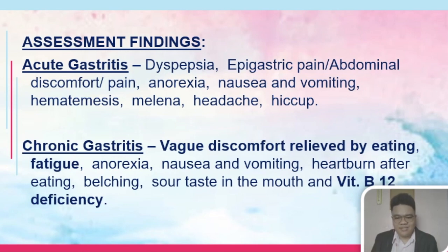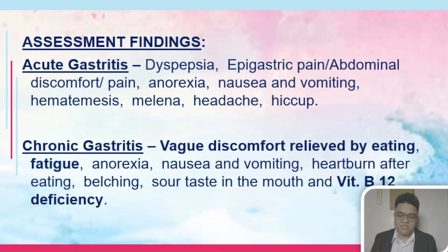Chronic gastritis also presents with anorexia, nausea and vomiting, heartburn after eating, belching, sour taste in the mouth, and vitamin B12 deficiency. Because the patient is already experiencing atrophic gastritis, the cells that produce intrinsic factor are gone, hence leading to vitamin B12 deficiency.